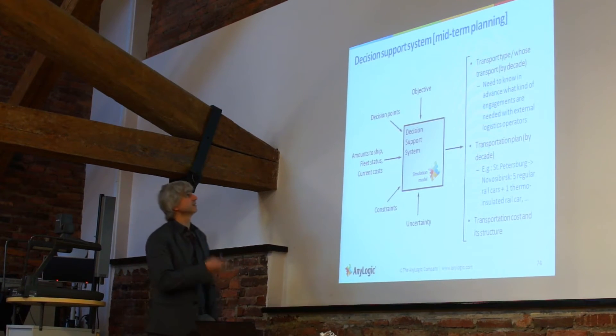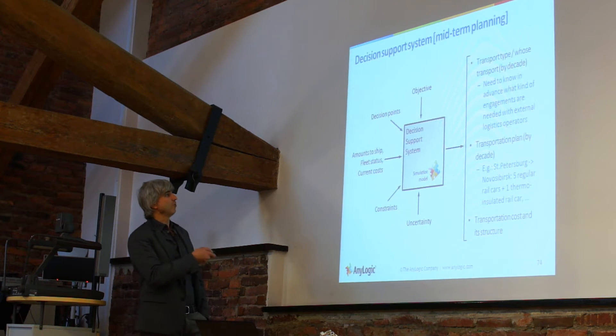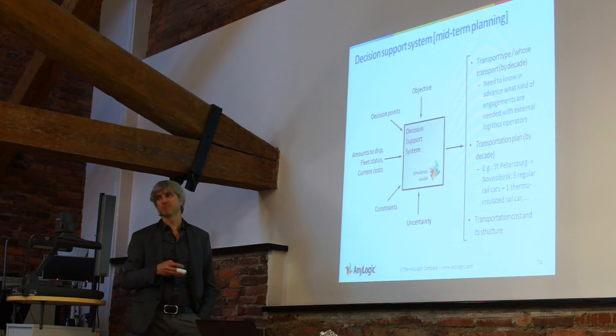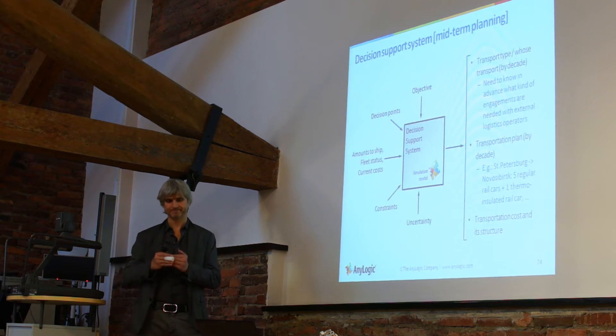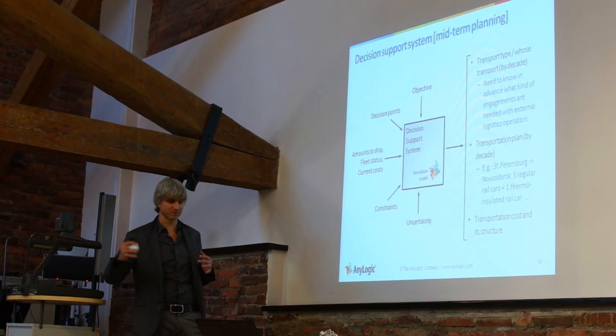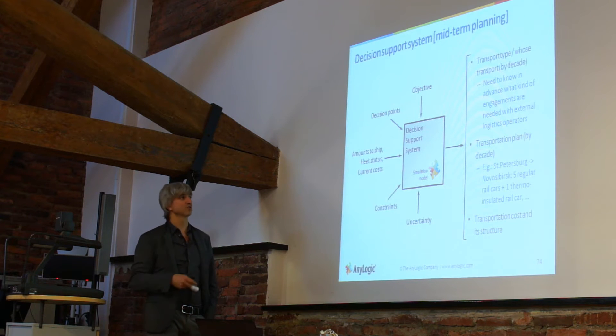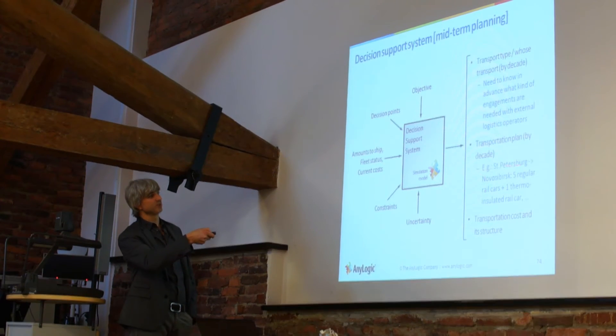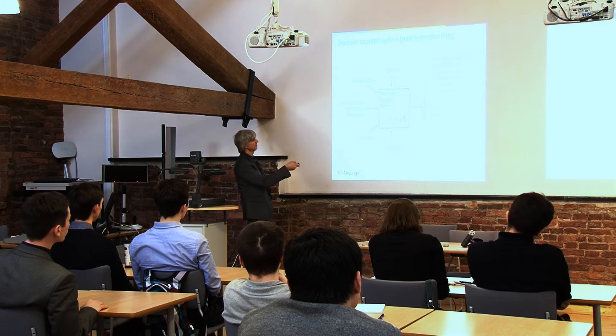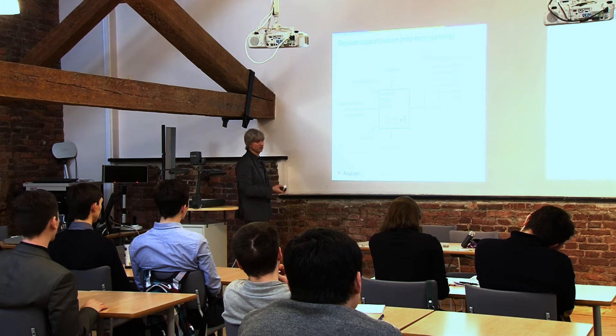So what we actually did: the first thing we did for Baltica, we built a midterm decision support system which was used on bi-monthly basis. So every 60 days is the period Baltica plans midterm logistics for the next 60 days. This decision support system was not just a simulation model but many things around it, and the output was which transport to use, transportation plan by decades. Let's say from St. Petersburg to Novosibirsk, five regular rail cars plus one special car, and also estimation of transportation cost.